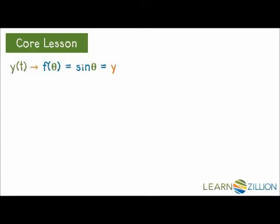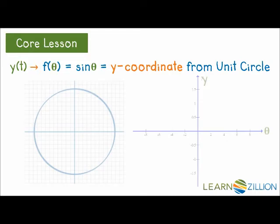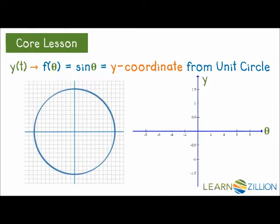Y of t can be written as f of theta, which equals sine of theta, defined as the y coordinate from the unit circle because t and theta are the same numerically. We will use the unit circle to get the y coordinate that goes with our t or theta value, and then we'll use another Cartesian plane to plot points for our function. When t or theta is 0, the corresponding point on the unit circle is 1, 0. We're going to use the y value 0, so on the graph to the right, we plot a point using 0 for theta on the horizontal axis and 0 on the vertical axis for the y value.